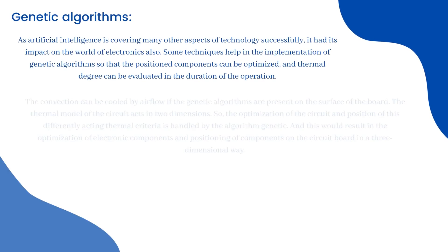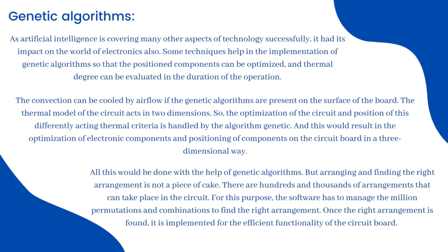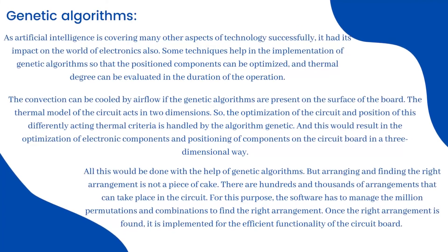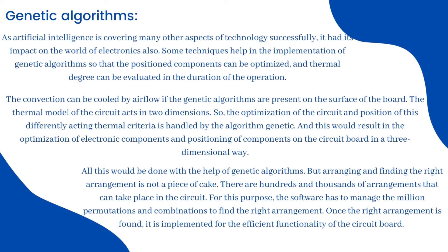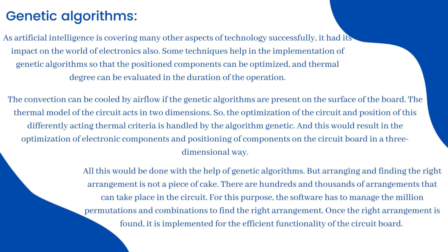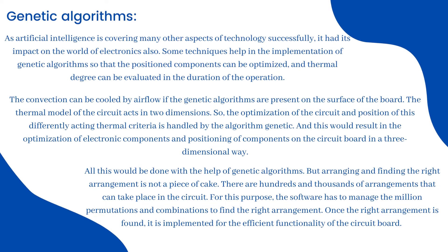Genetic algorithms: as artificial intelligence is covering many aspects of technology, it has also had an impact on the world of electronics. Some techniques help implement genetic algorithms so that positioned components can be optimized and thermal degree can be evaluated during operation. Convection can be cooled by airflow if genetic algorithms are applied on the surface of the board. The thermal model of the circuit acts in two dimensions, and the optimization of circuit position and thermal criteria is handled by the genetic algorithm, resulting in three-dimensional optimization of component positioning on the circuit board.